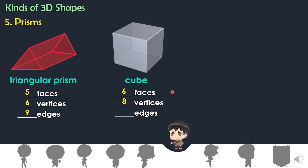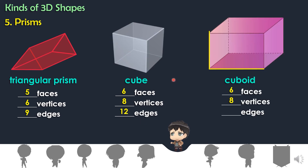Let's count the sides or edges: one, two, three, four, five, six, seven, eight, nine, ten, eleven, twelve. Cube has twelve edges.